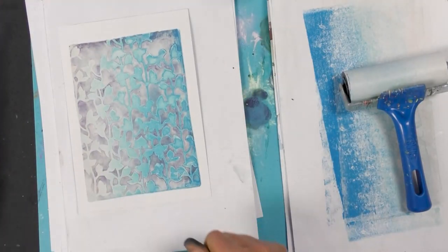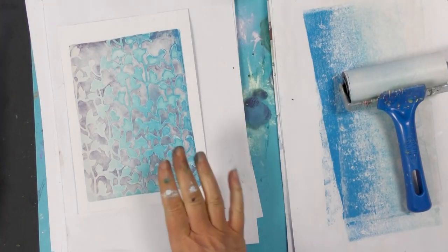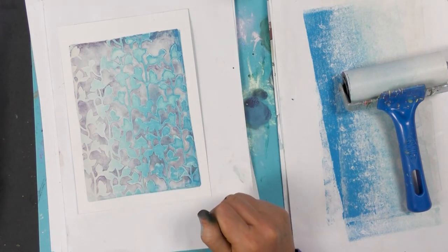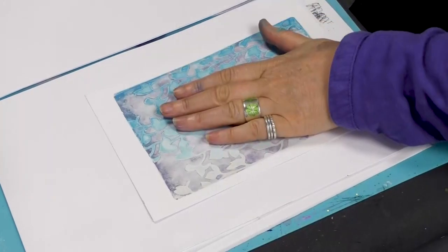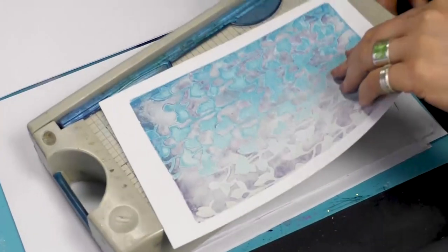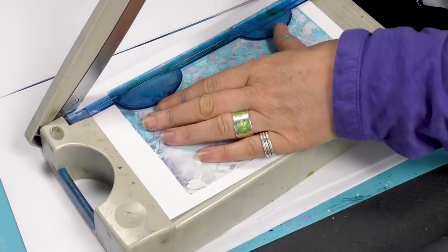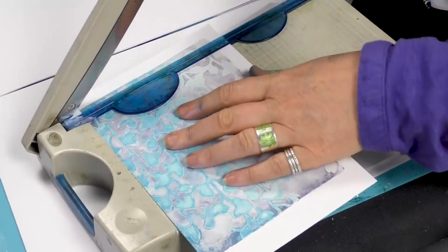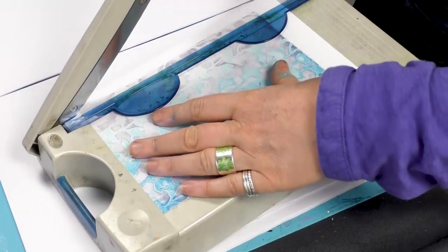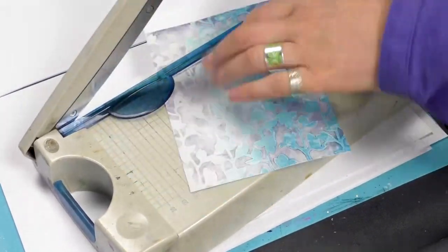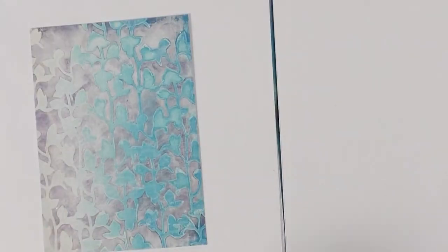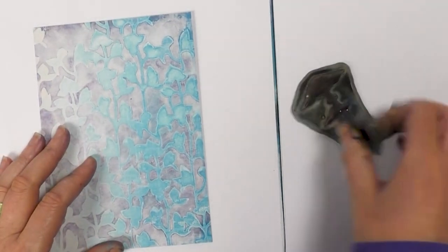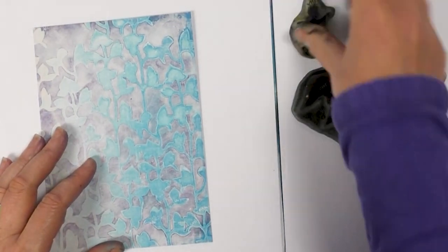So that's just another way of creating a background. So I'll let that dry off completely and then think about what I'm going to actually do with this, whether I want to leave it as it is or whether I want to stamp over. So I'm going to just trim this down and then pick a couple of stamps.